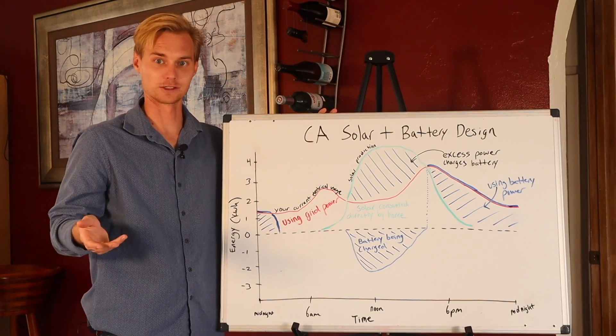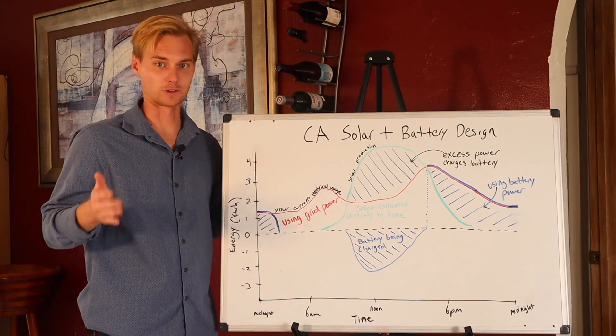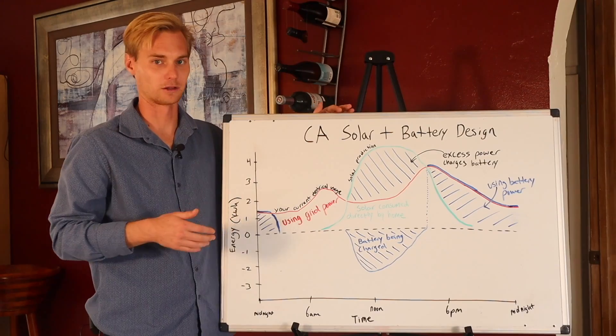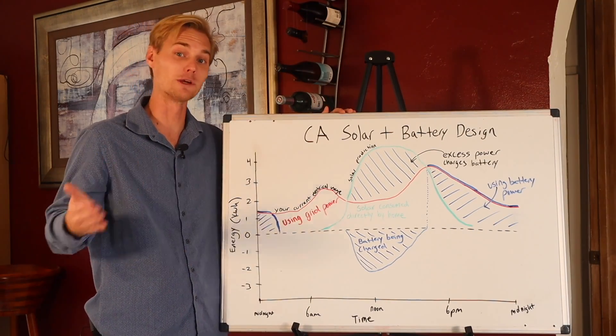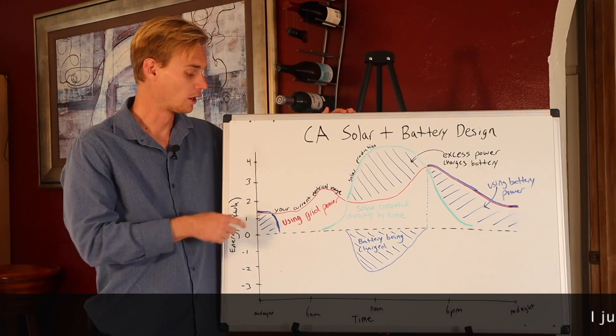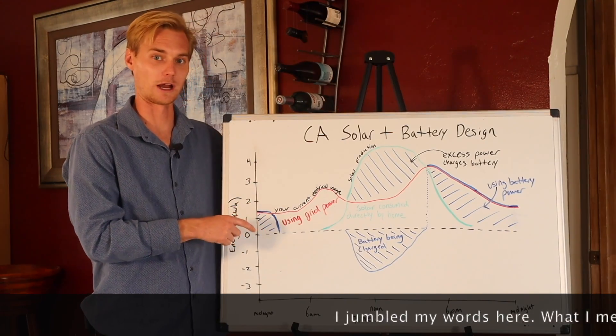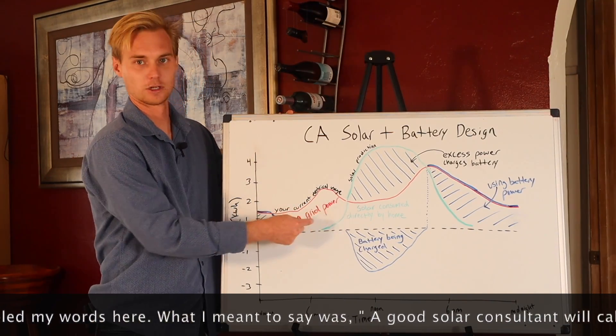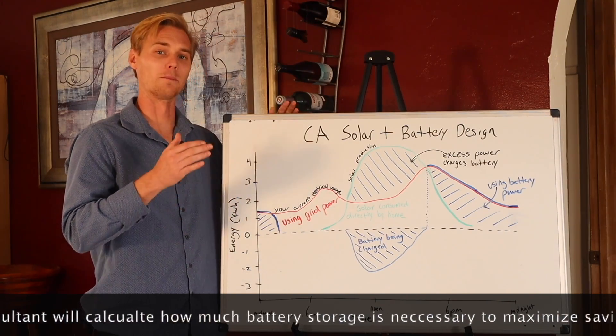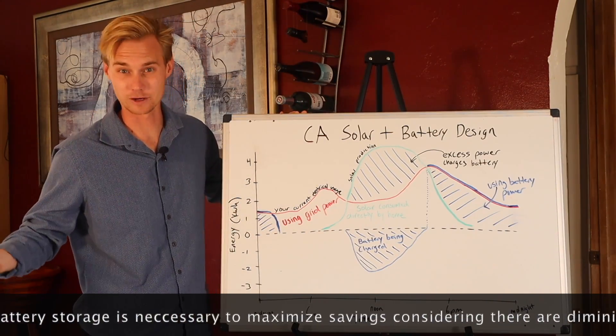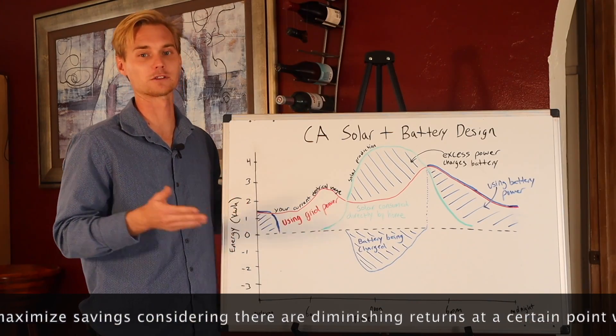So when designing the system, there's all these different softwares that can calculate, and they're all improving it drastically because this whole net metering 3.0 in California is brand new. But we're going to be figuring out and analyzing how much leftover power from the grid you need, combined with the cost of more batteries, of course, to give you the best ROI.